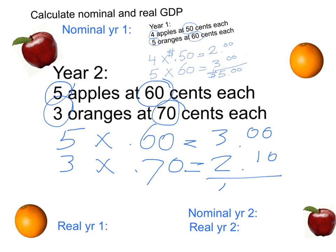So as you can see, it's $5.10, $5.10 in year two. And the nominal GDP from year one, year two, has actually increased by $0.10.